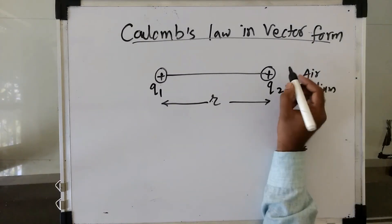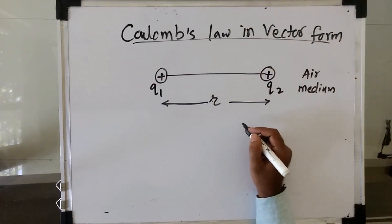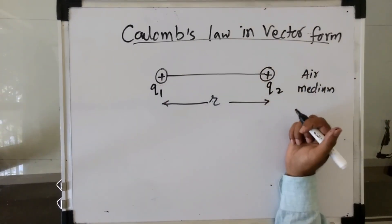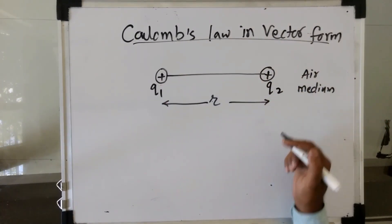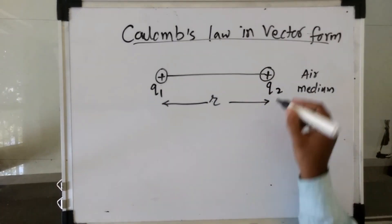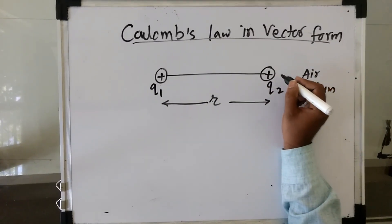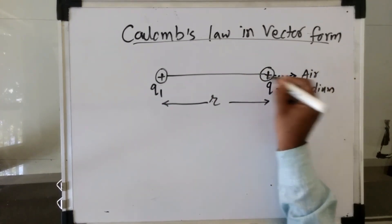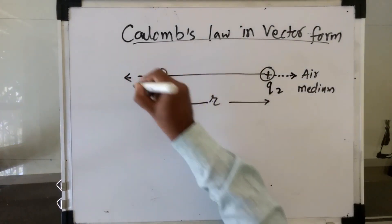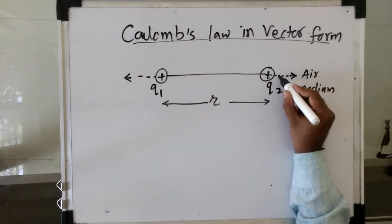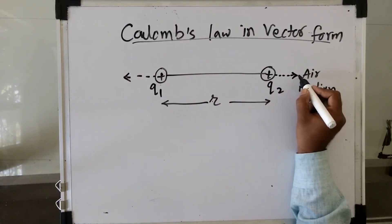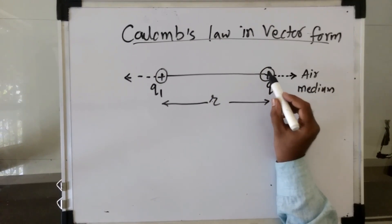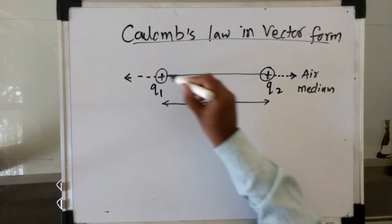As these two are like charges, there is obviously a force of repulsion. If there would have been unlike charges, then there will be a force of attraction. As we have considered both are like charges, there will always be a force of repulsion. The Coulomb's force between two charges is always a central force — that means it acts along the line joining the centers of the two bodies.